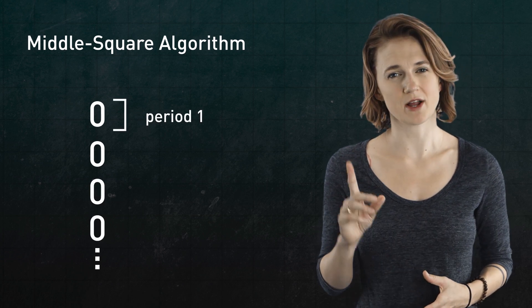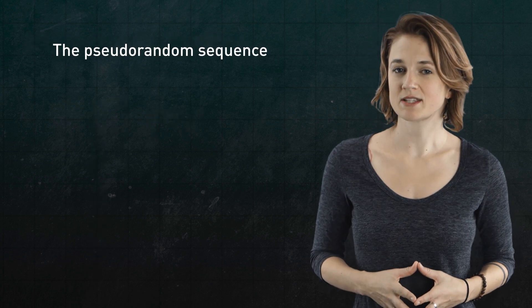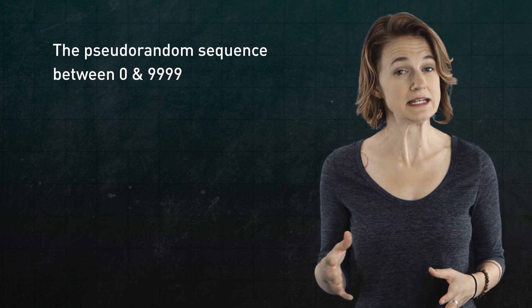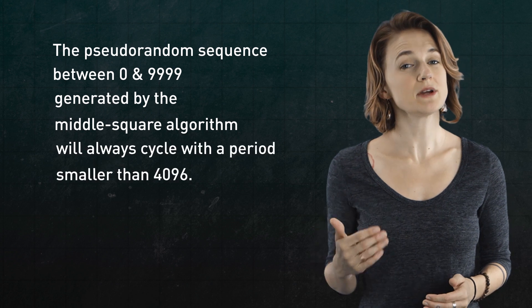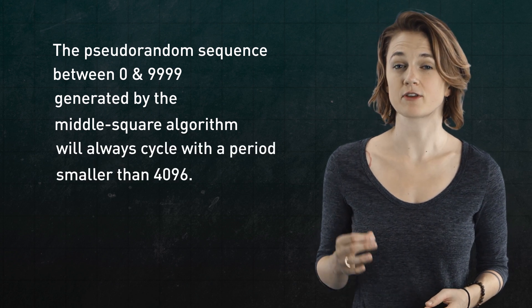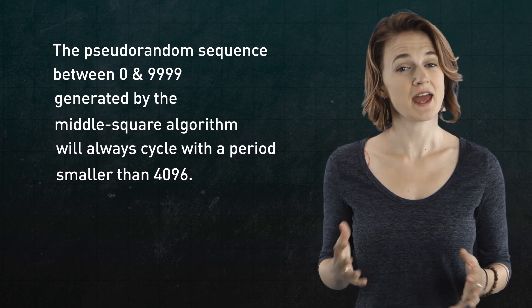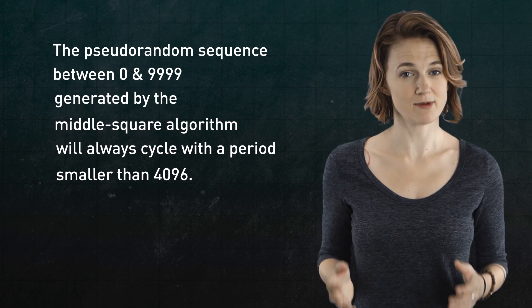The pseudorandom sequence of numbers between 0 and 9,999 generated by the middle square algorithm will always cycle with a period smaller than 4,096. And as we've seen, the period can be much smaller.